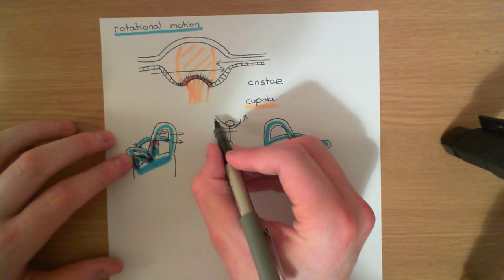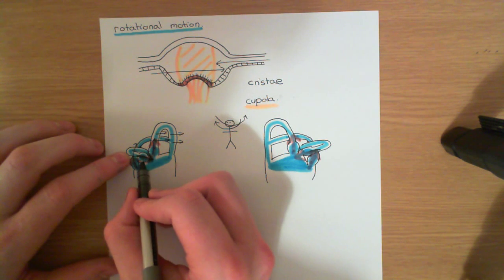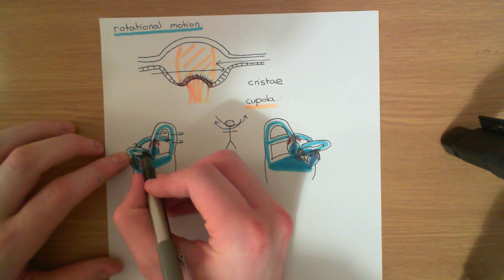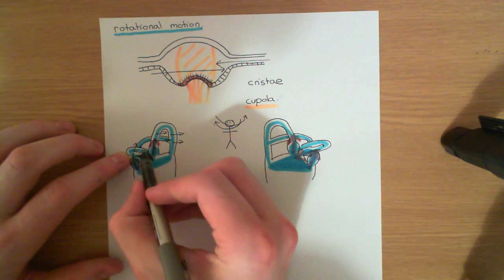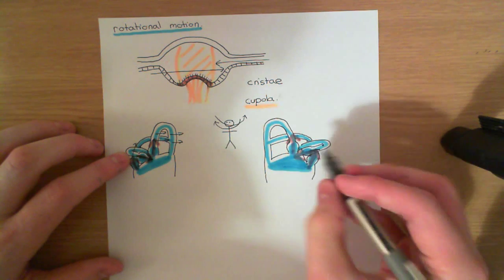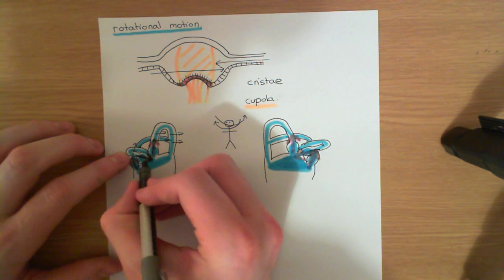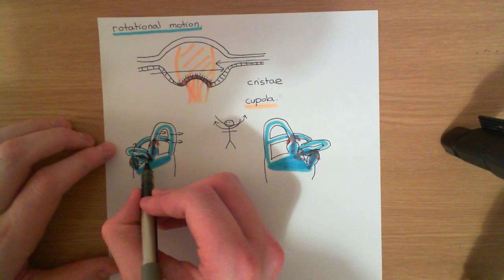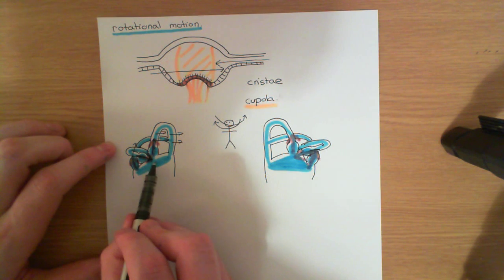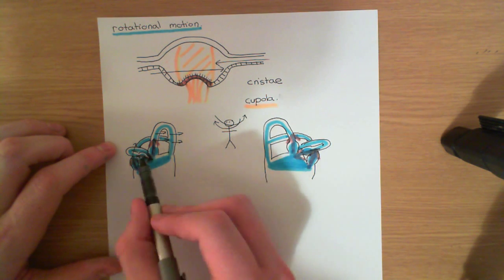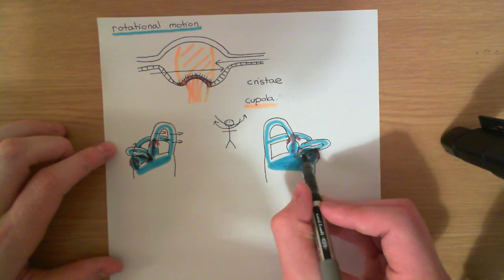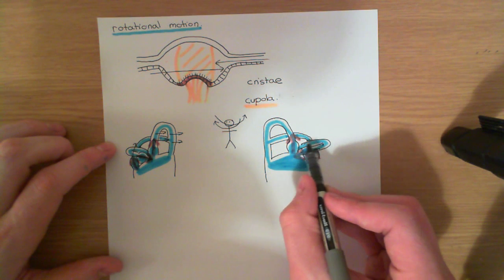When you rotate your head round to the right, this horizontal semicircular canal on the right side is going to be activated and this one on the left is going to be inhibited. When we rotate our head round to the right, you can imagine both of these rotating round to the right. The fluid in the horizontal semicircular canals will move to the left relative to the duct. The fluid here on the right will move round to the left — that will deviate the cupola towards the utricle and result in activation of the hair cells here, because the hair cells are oriented towards the utricle. You'll get loads of activated bipolar neurons on the right side.